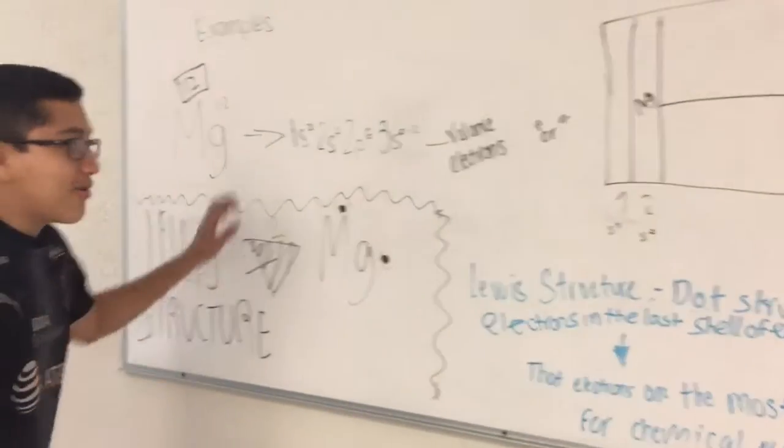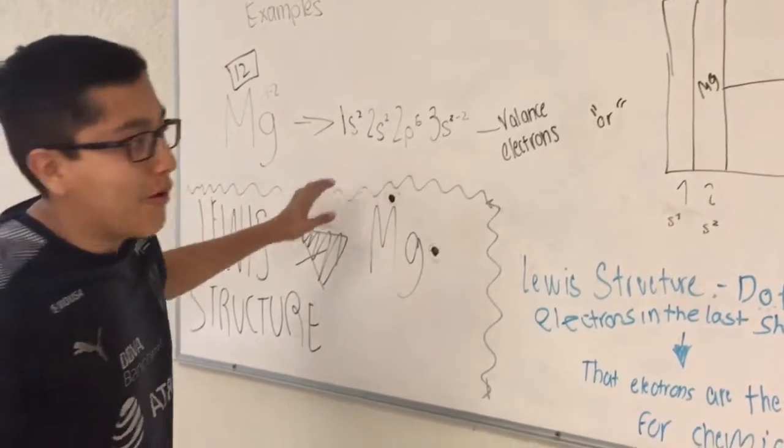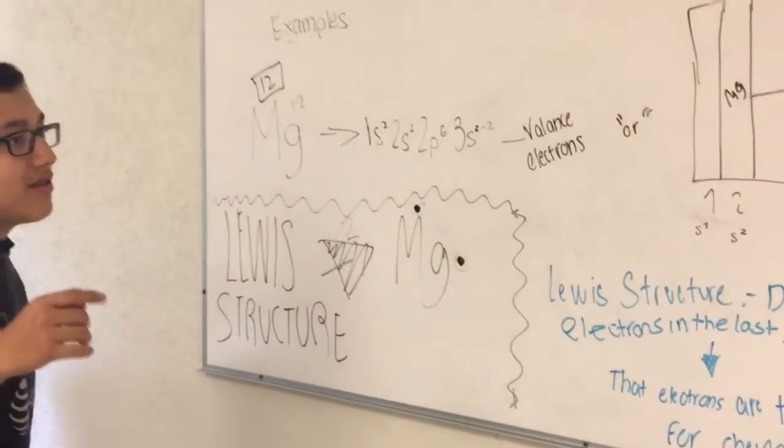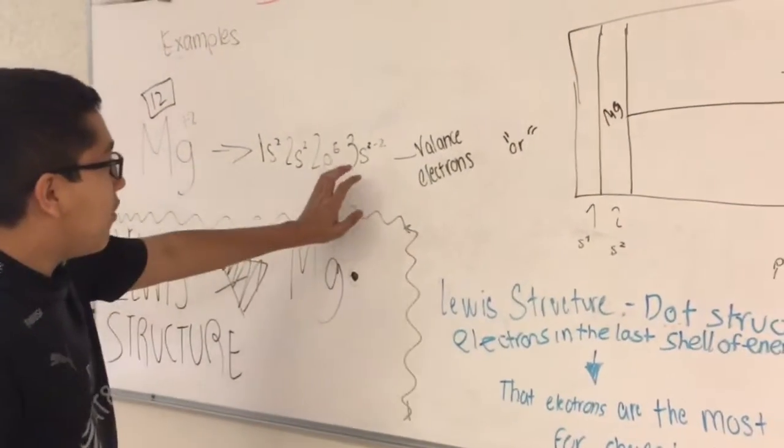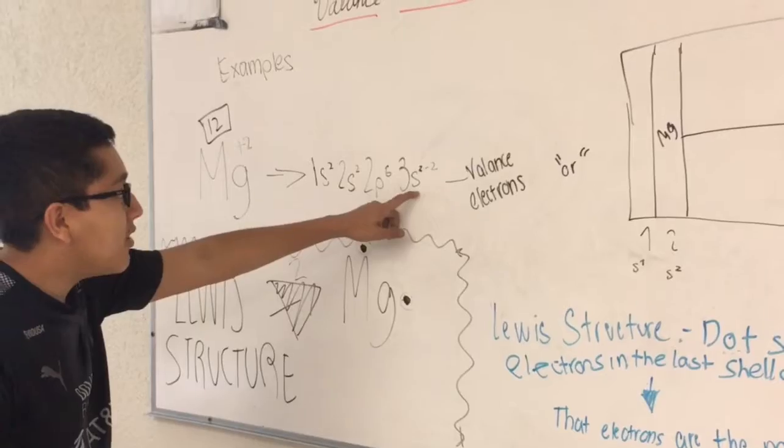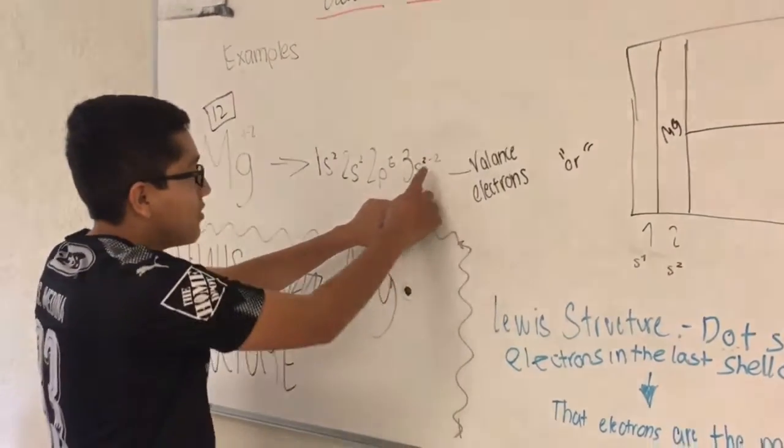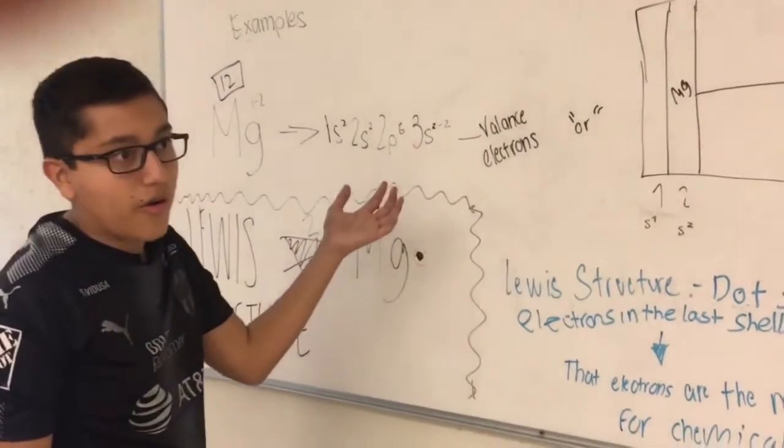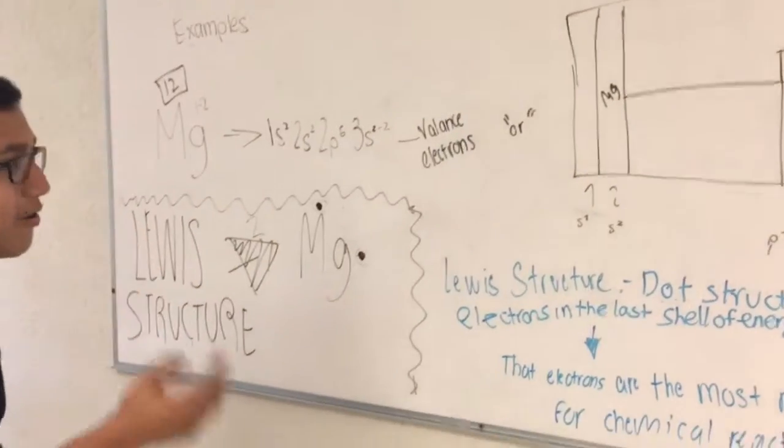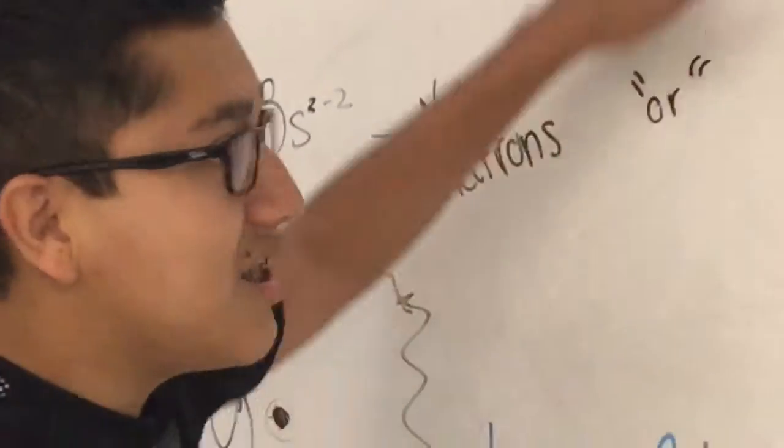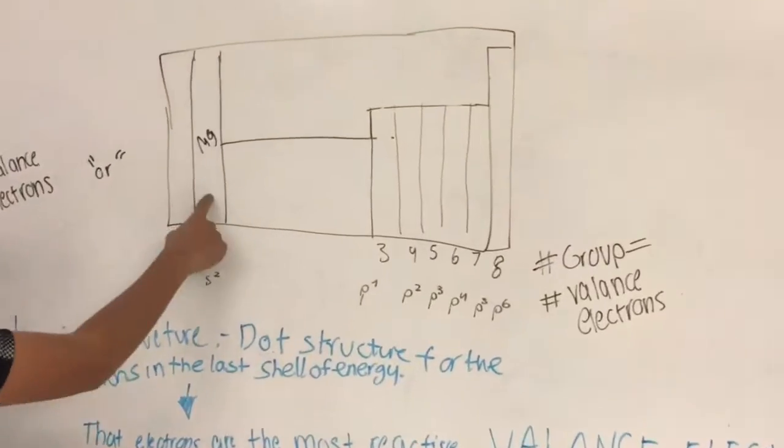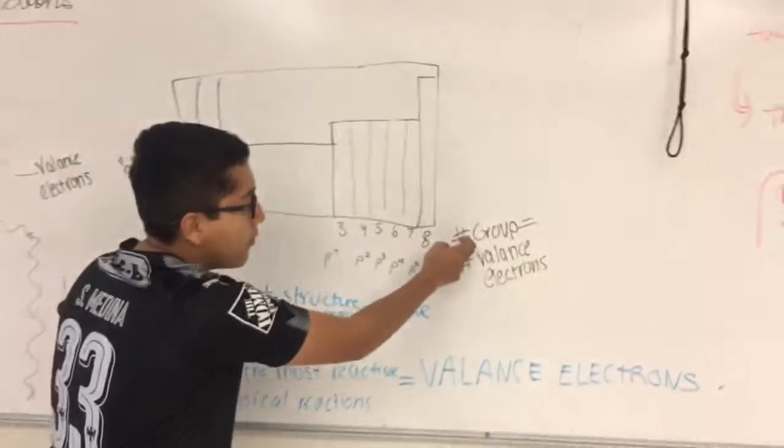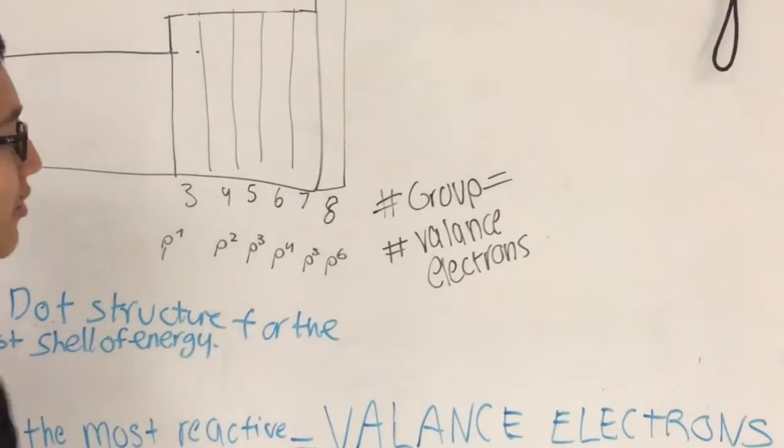We can see valence electrons in different ways. One way is making the electronic configuration by only seeing the last shell of energy, that is the orbital. In this case 2p2 will be our valence electrons. Another way to see them is in the periodic table. For example, Magnesium is in group 2, so the number of groups equals the number of valence electrons.